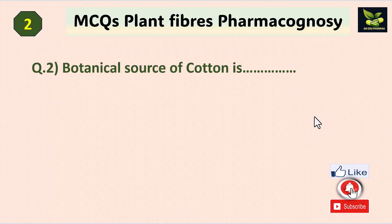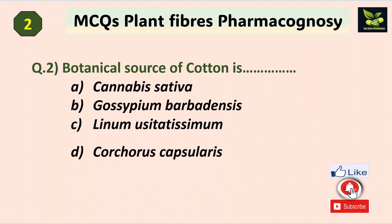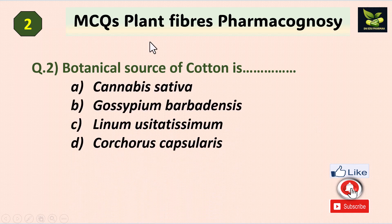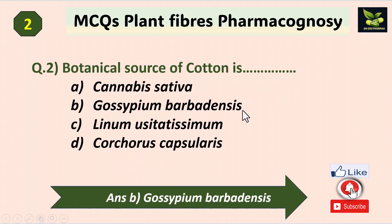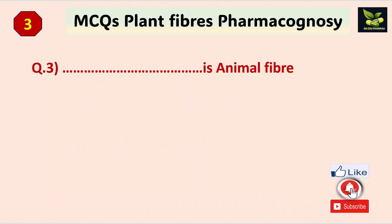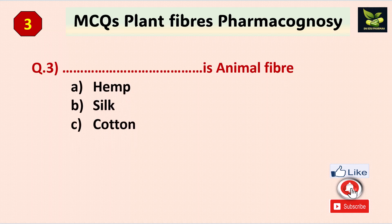Question two: what is the botanical source of cotton? These are the four options. The answer is B, Gossypium barbadensis. Question three: which is an animal fiber? Options are hemp, silk, cotton, and jute.